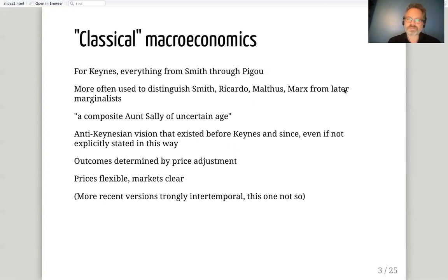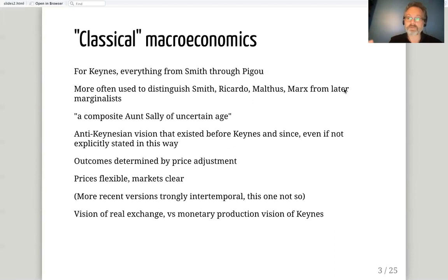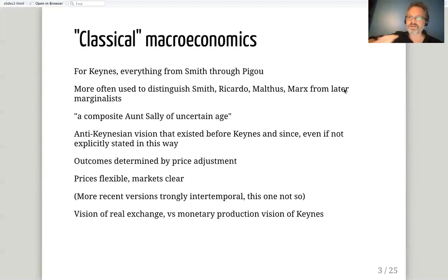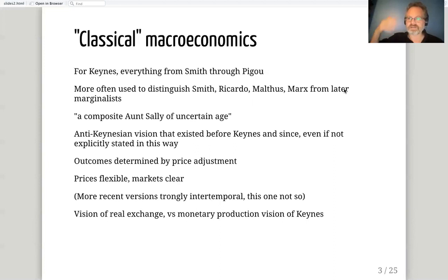The more recent, strongly intertemporal versions of the classical story are very interested in behavior over time, but that's not really the case for the classical model we're discussing here. A very fundamental cleavage is the vision of real exchange — the fundamental processes of the economy are commodities being traded. Money is a secondary, incidental factor, whereas the Keynesian vision is one of a monetary production economy where money is central and cannot be abstracted away.